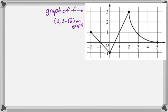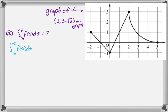You're told that this is the graph of F that you're given, and you're also told that the point (3, 3 minus root 5) is on the graph. You also know that the part to the right is a semicircle and the other two parts are linear. Part A says the integral from negative six to five of F of x dx is seven, and we want to find the value of the integral from negative six to negative two of F of x dx.